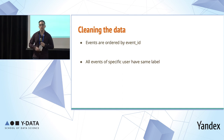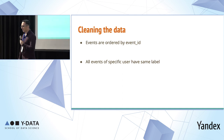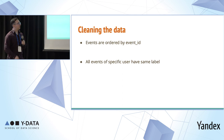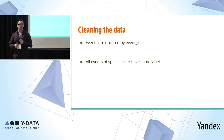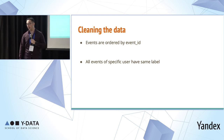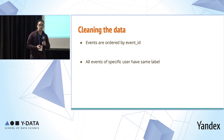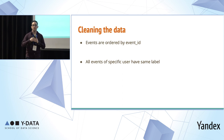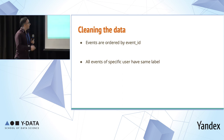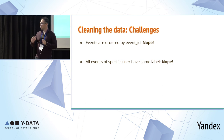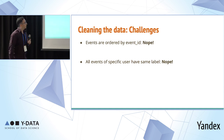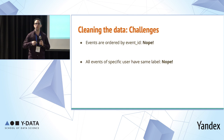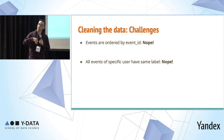When we went to actually do real work, we needed to clean the data. We had some assumptions: that events were ordered by event ID or by time, and that all events for a specific user would have the same label. Unfortunately, both were wrong. The ordering was fixable, but we did have an issue where specific users had multiple labels — users had both finished and not finished the funnel at the same time.